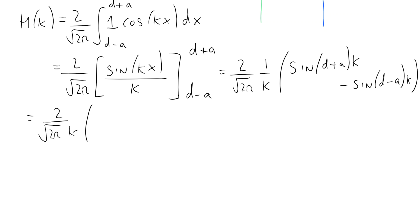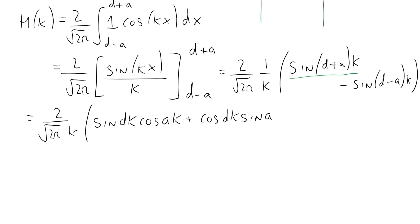Recall that sine(a + b) = sine(a)cos(b) + cos(a)sine(b). The first term sine(dk + ak) expands to sine(dk)cos(ak) + cos(dk)sine(ak). We then subtract sine(dk minus ak), which expands to sine(dk)cos(ak) minus cos(dk)sine(ak).